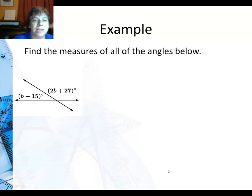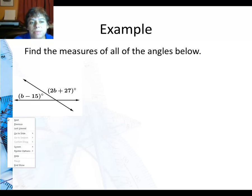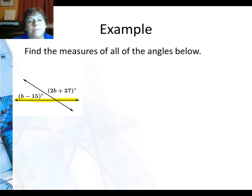So in this example I want to find the measures of all the angles here. And I know these two are a linear pair. You can see the straight line that's right here. So let me go ahead and highlight that. So there's a straight line right there. Well that means the two angles have to add up to 180. So I set up an equation, b minus 15 plus 2b plus 27 is 180. That's the angle addition postulate.